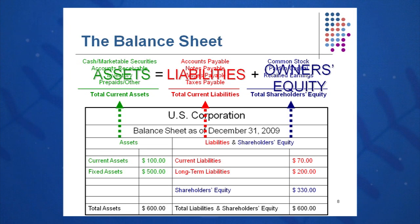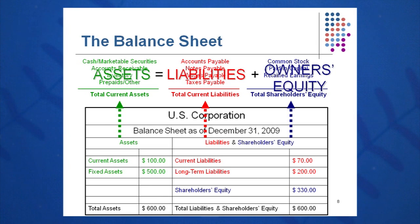What's left over is shareholders' equity. When I take my current assets minus my current liabilities, I get net working capital. When I take total assets and subtract total liabilities, I get stockholders' equity. Stockholders are residual owners of the corporation. Items listed under shareholders' equity include common stock, preferred stock, paid-in surplus, paid-in capital, and retained earnings, though you may see slightly different terms.